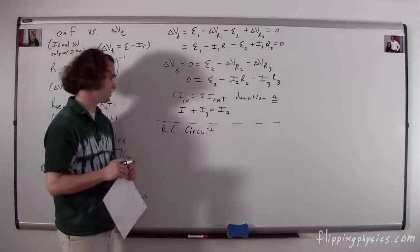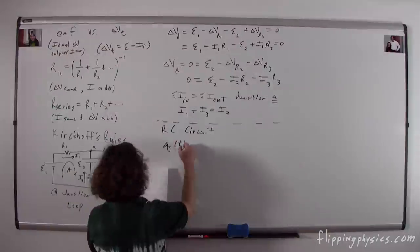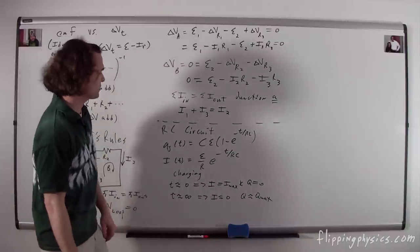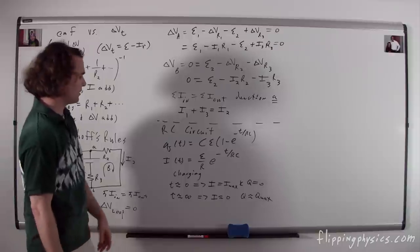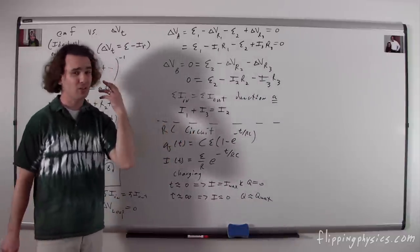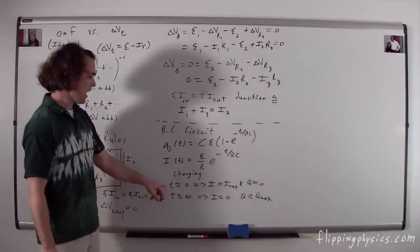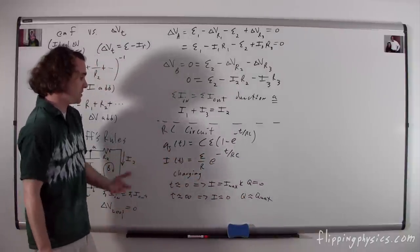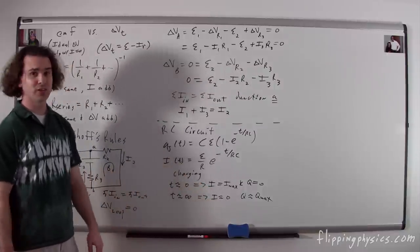An RC circuit has both a resistor and a capacitor, usually with a battery — charging a capacitor through a resistor. When charging, the charge as a function of time is Q(t) = Cε(1 − e^(−t/RC)), and the current as a function of time is I(t) = (ε/R)e^(−t/RC). At t = 0, the charge is zero and current is maximum. At t ≈ ∞, the capacitor is fully charged, the current goes to zero, and the potential difference across the capacitor equals the EMF.